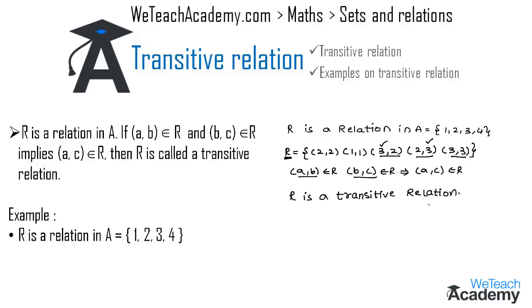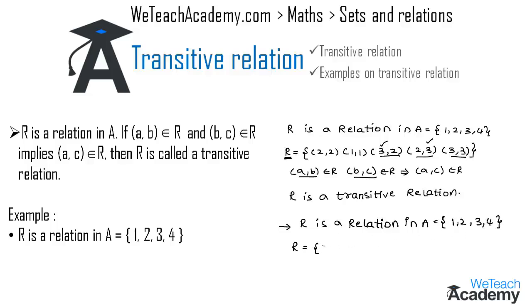Now let us consider another example. Here r is a relation in the set a = {1, 2, 3, 4}, with ordered pairs: (1,2), (2,3), and (3,4).